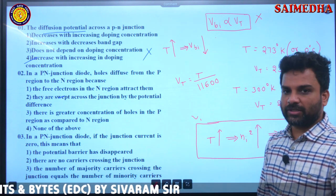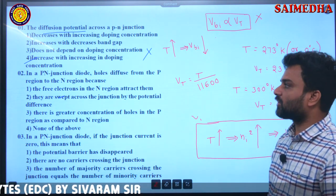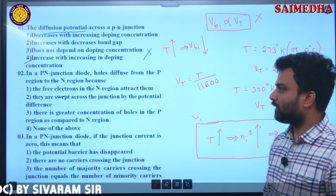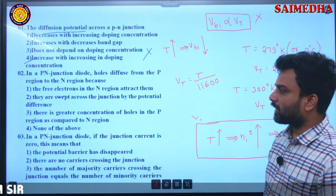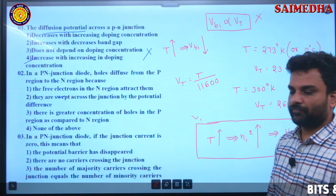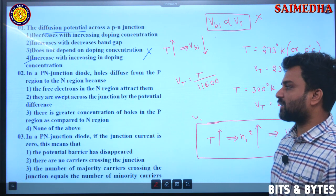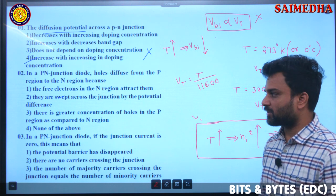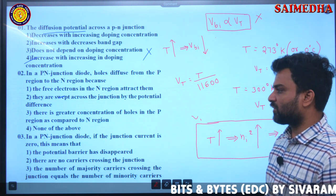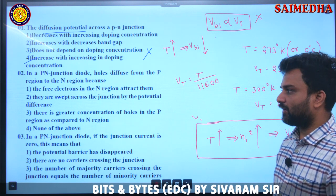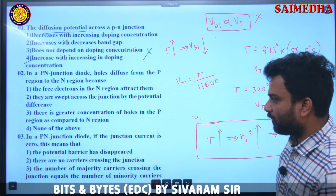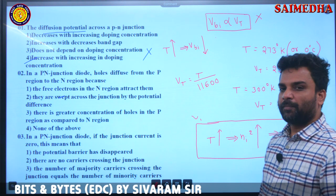In a P-N junction diode, holes diffuse from the P region to the N region because: the free electrons in the N region attract them, they are swept across the junction by the potential difference, there is greater concentration of holes in the P region as compared to the N region, none of the above.